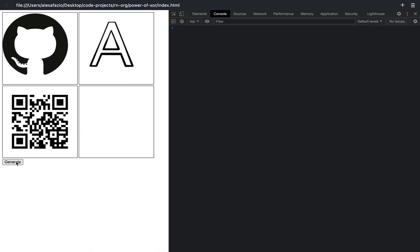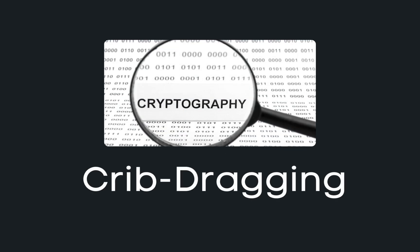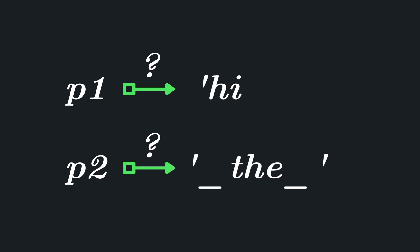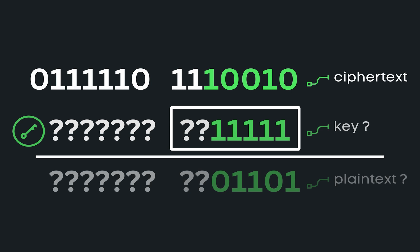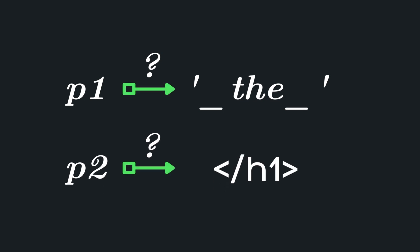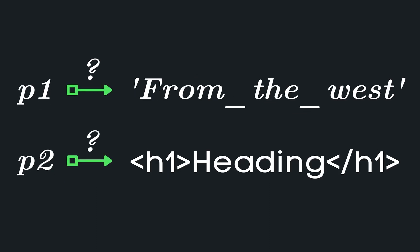Still, this attack only works best with visual messages. Another attack based on reused keys is called crib dragging. This involves guessing parts of a message to uncover parts of other messages. If two messages were encrypted with the same key and we know part of the first message, then we will know part of the key, and we can use that part of the key to unlock a section of the other message. This works especially well if we know the messages are in English or even another text format like HTML. Then we can look for commonly used words like 'the' and 'h1'. If we keep finding matches, we can uncover all the messages encrypted with that key. This process is usually automated as messages can be long.